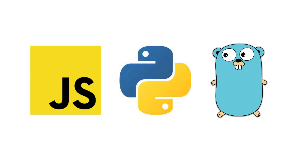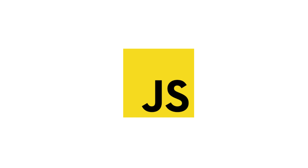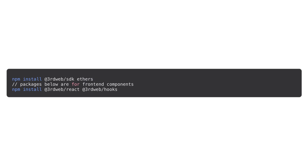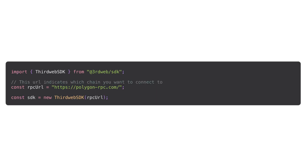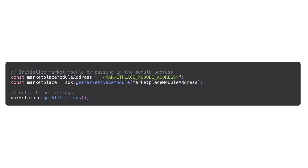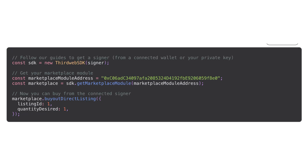To interact with the smart contract from the front-end, you can use one of the three ThirdWeb SDKs in JavaScript, Python, or Go. For this example, we'll use the JavaScript SDK. You will need to install the SDK and the ethers library, then import the libraries in your code. You instantiate a connection to the blockchain with the ThirdWeb SDK, and to interact with your smart contract, you instantiate a module object and pass the address of the module contract — which you can get from your dashboard. Once you have the module object, you can trigger specific actions, all without writing any smart contract code.